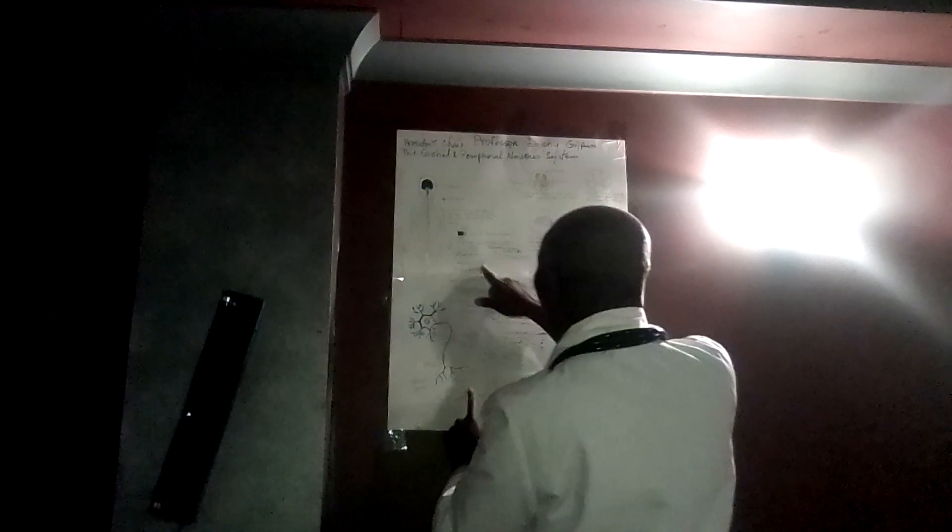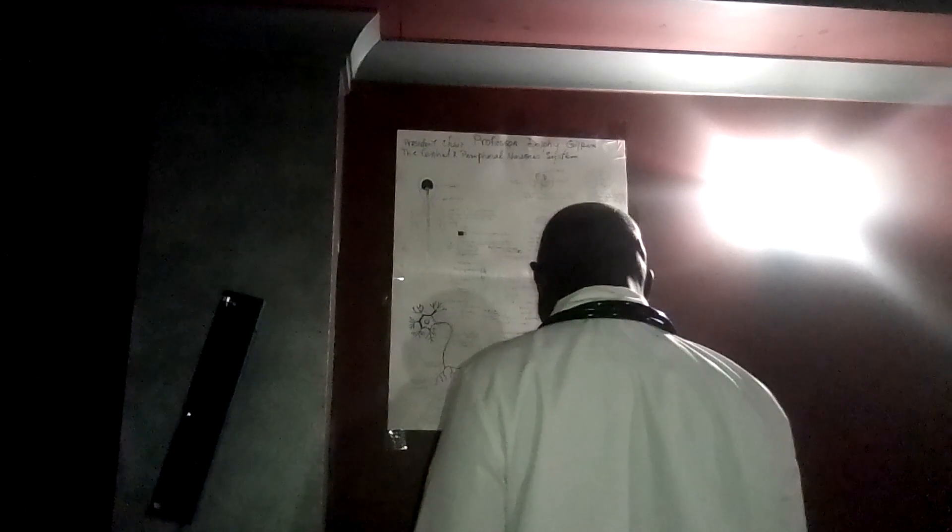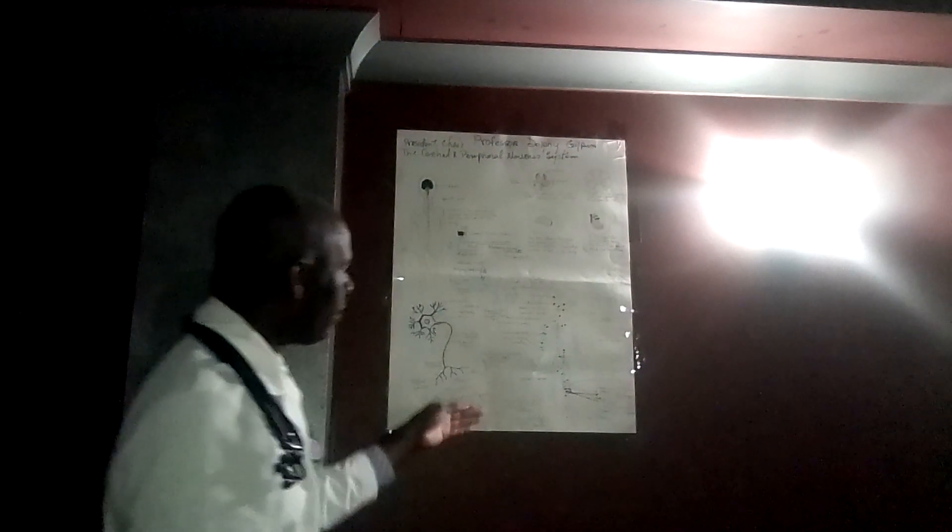Here we have the airway being constricted in the parasympathetic, and here we have the airway being dilated in the sympathetic. Likewise, the bladder relaxes in the sympathetic, and there is increased blood flow. This one is the kidney and the adrenaline. So you have the autonomic parasympathetic and the autonomic sympathetic.